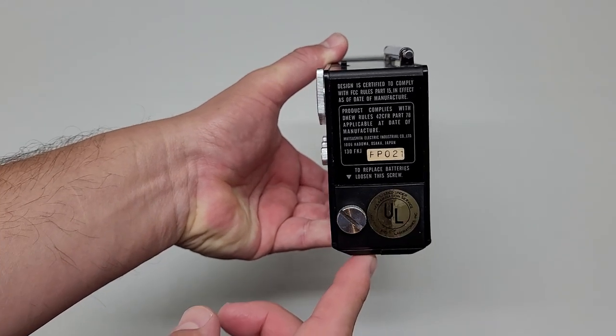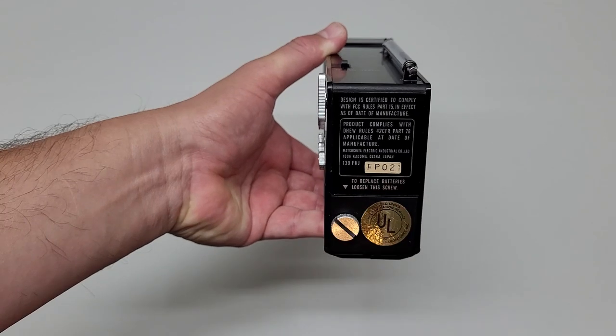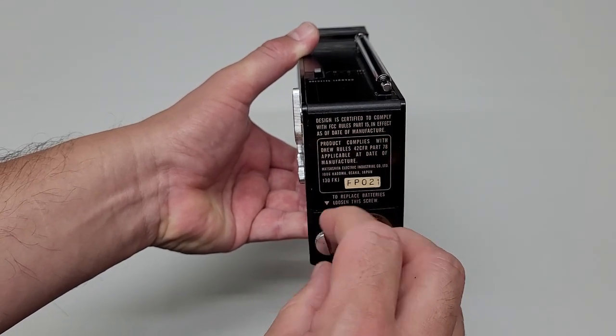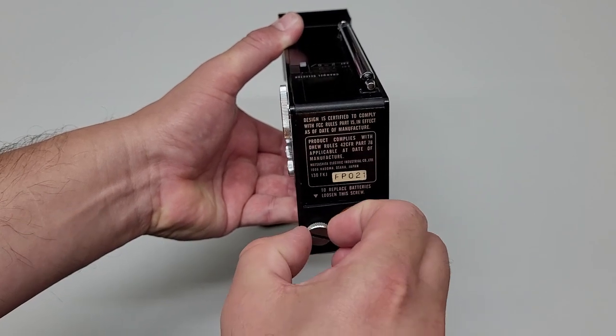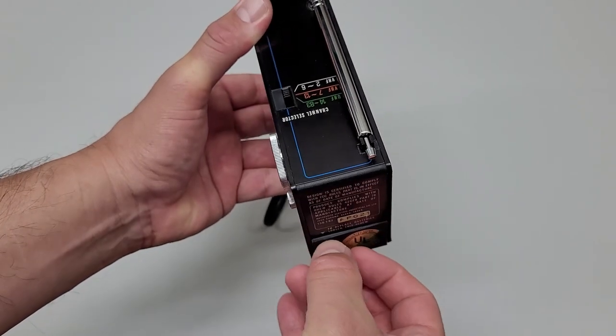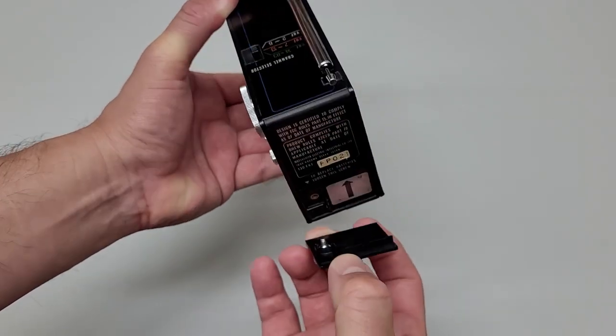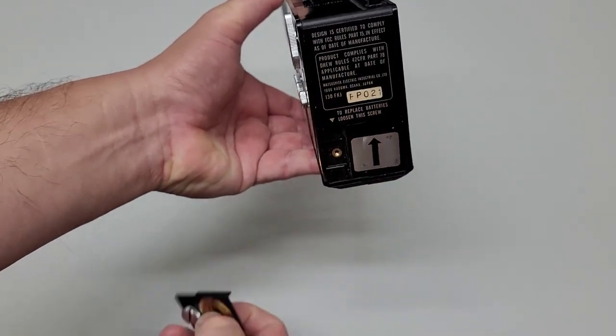Let's take a look at the bottom. Not much to see. That's the connection to the wrist strap and a little bit of a warning: do not open, high voltage inside. Let's look at the back. This is where the battery is inserted and there's a little twist screw here. Let's open this up.